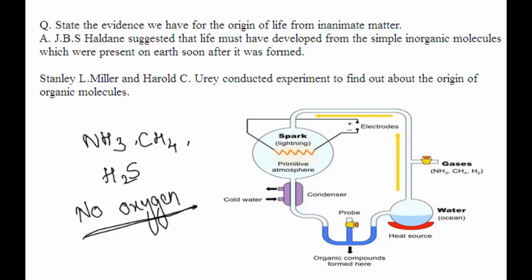They assembled an atmosphere similar to that thought to exist on early Earth. This had molecules like ammonia, methane, and hydrogen sulfide, but there was no oxygen at all. You can see in the figure, this was the experimental setup which was set by Miller and Urey.